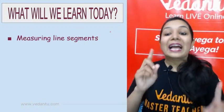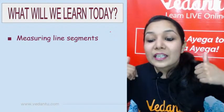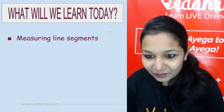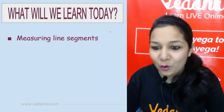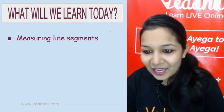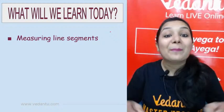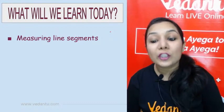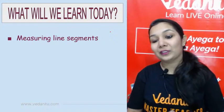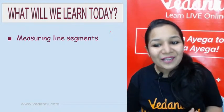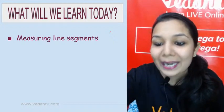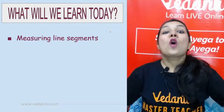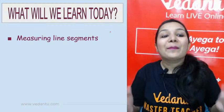What are we going to learn today? Last chapter we learned: what is a line segment? Tell us in the chat box. Line segment is the one which has two end points and which can be easily measured. It is a part of a line — but a line doesn't have any end points.